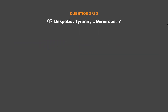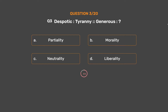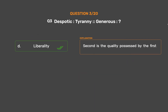Question No. 3. Despotic : Tyranny :: Generous : ? Option A: Partiality. Option B: Morality. Option C: Neutrality. Option D: Liberality. The correct answer is Option D, Liberality. The second is the quality possessed by the first.